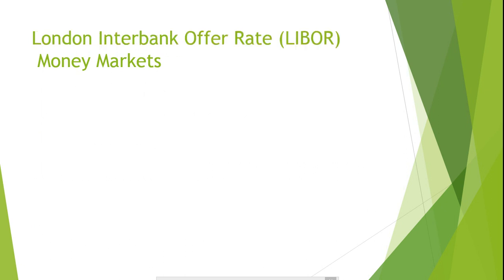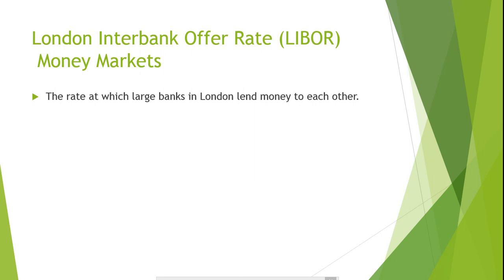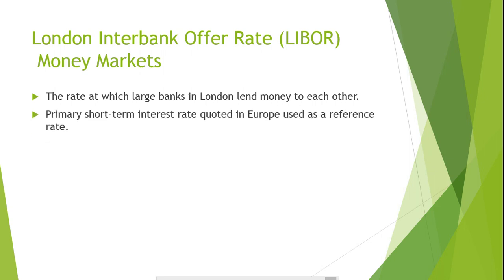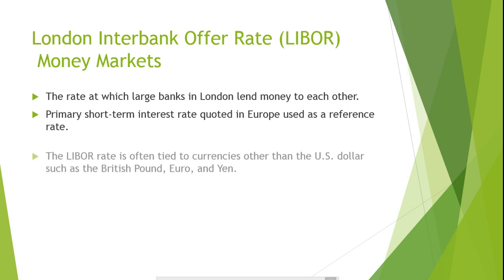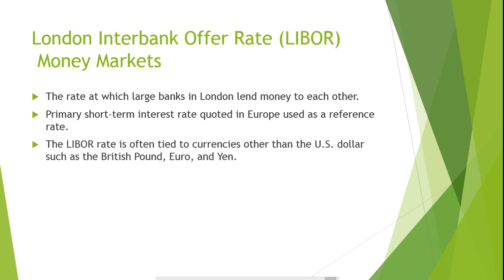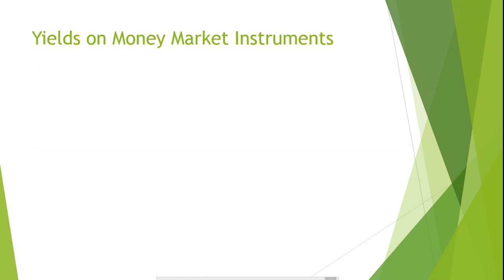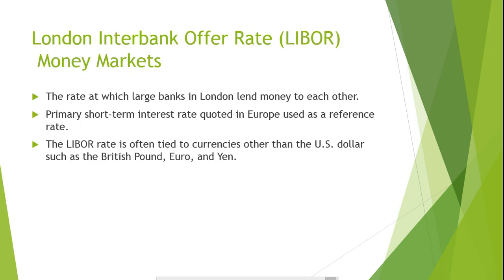The London Interbank Offer Rate, known as the LIBOR rate, is the rate at which large banks in London lend money amongst each other. The LIBOR rate is the primary short-term interest rate quoted in the European money market and is used as a reference rate for a large range of financial transactions. For example, a company may borrow at a rate stated as LIBOR plus 3%. Therefore, if the LIBOR rate was 4%, the company would be borrowing funds at a 7% interest rate. The LIBOR rate is widely used among investors, just as the Fed funds rate is, and is often tied to currencies other than the U.S. dollar, such as the British pound, Euro, and the Yen.